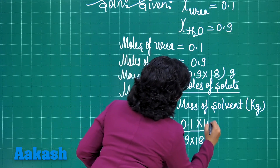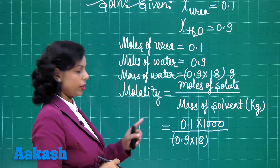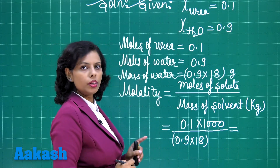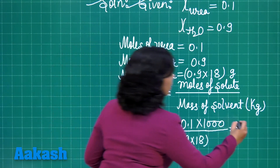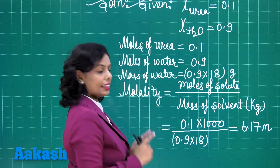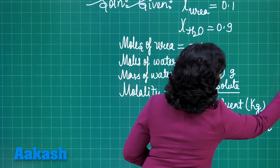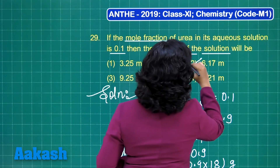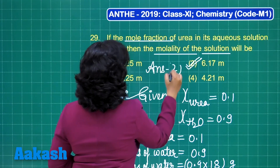The 1000 comes into the denominator. If you solve this, you will find the value is 6.17 molal, and that is the answer for this particular question. The correct answer is option 2.